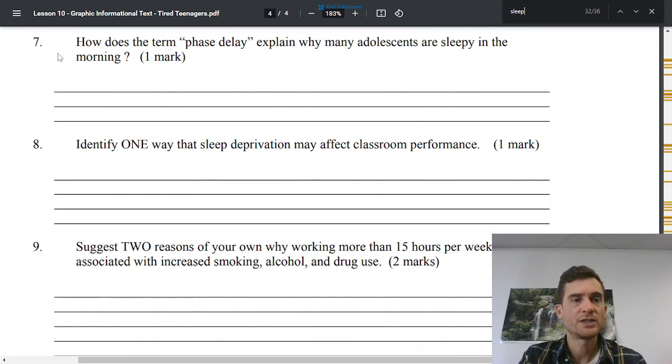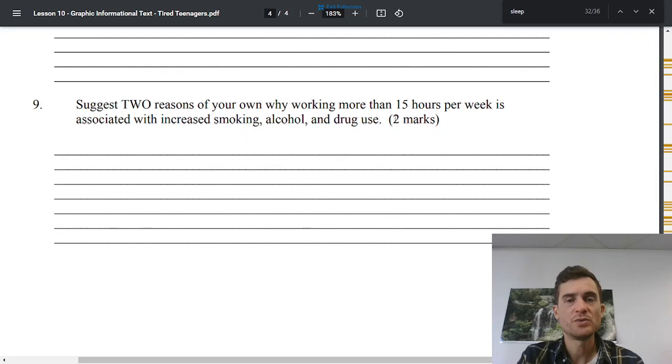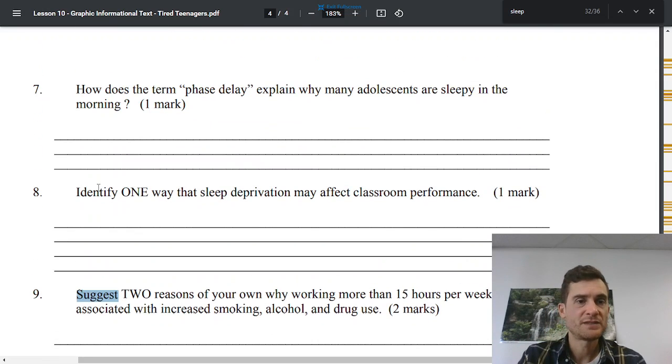Here we have short answers. So make sure you write in the complete sentence. This would be one sentence, one fact, one mark, one sentence, one fact, one mark. This would be two sentences, two facts, two marks. Suggest means your own ideas. Okay. So you're inferencing. Identify means find it in the article. And this one is also going to be find it in the article.